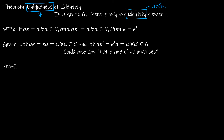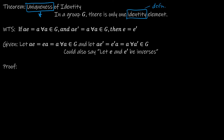I used the definition of an identity element for the 'what to show.' The definition says AE equals EA equals A for all A in G. So E is an identity, and E prime is also an identity — I'm basically saying there are two identities. Then I'm trying to prove that E and E prime must be the same. The good news is we're going to use the cancellation law we just proved, which will make this proof very straightforward. My given can just say: let E and E prime both be identities.